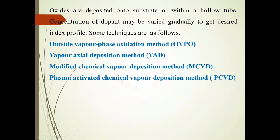These oxides are deposited on a substrate. The concentration of dopants may be varied very gradually to get a graded index profile. Some techniques are: Outside Vapor Phase Oxidation method, Vapor Axial Deposition method, Modified Chemical Vapor Deposition method, and Plasma Activated Chemical Vapor Deposition method.